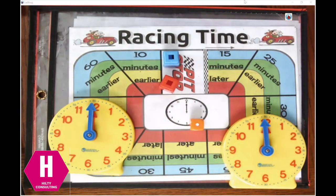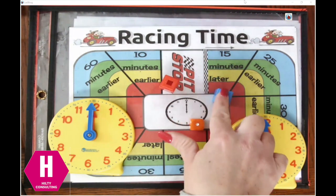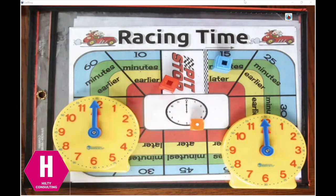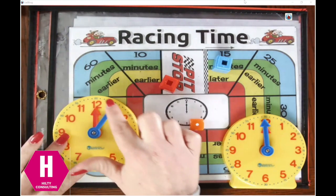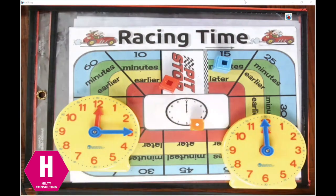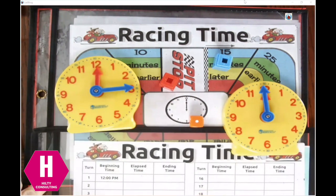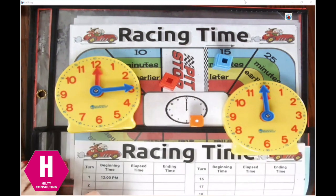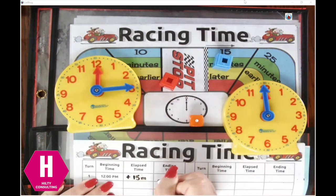I'm gonna go first. I rolled a one, so I'm gonna move from pit stop to this first space here, which says 15 minutes later. Everybody's clock starts at 12 o'clock, so I now need to make it 15 minutes later and I'm gonna turn my clock to 12:15. On my recording sheet, my beginning time was 12 o'clock, the elapsed time I landed on was plus 15 minutes, and my ending time now is 12:15.